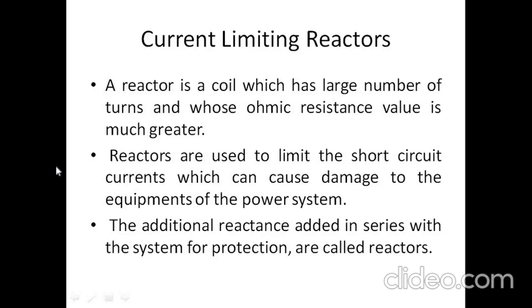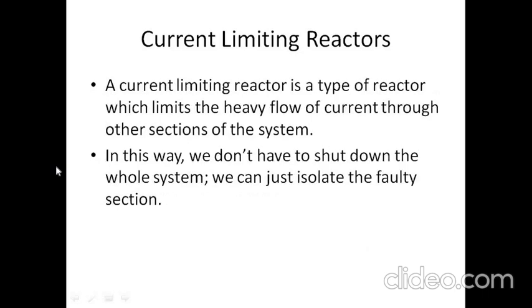Under abnormal conditions when a fault occurs, the fault current magnitude is very large. Our protection system and whatever protective switchgear we are using must be capable of handling this large amount of current. To reduce this fault current magnitude, we are going to use this reactor coil. The current limiting reactor is a type of reactor which limits the heavy flow of current through the other sections of the system.